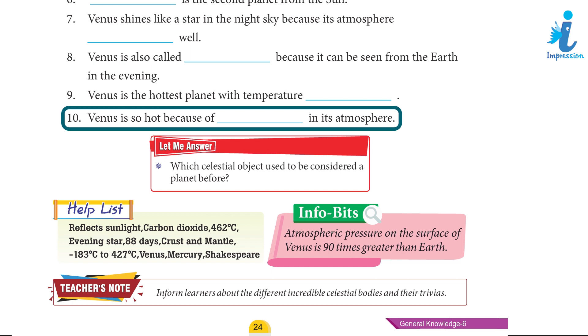9. Venus is the hottest planet with temperature 462 degrees Celsius. 10. Venus is so hot because of carbon dioxide in its atmosphere.